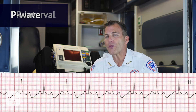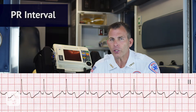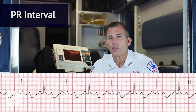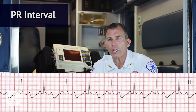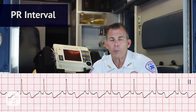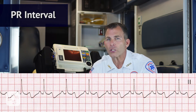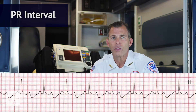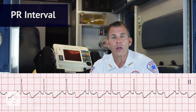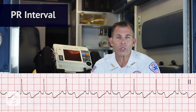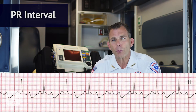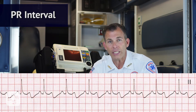Now we want to know what the PR interval is for this ECG. The PR interval falling between the norm of .12 to .20 seconds is okay, and in this case, yes. The PR interval is contained within one large box, which equals .2 seconds. Is the PR interval constant? Yes.